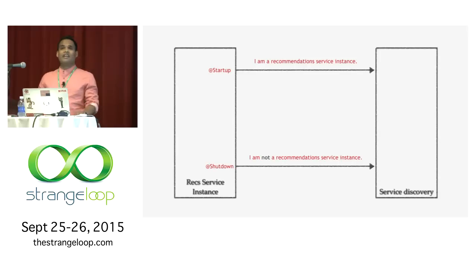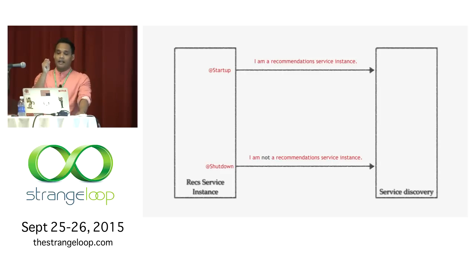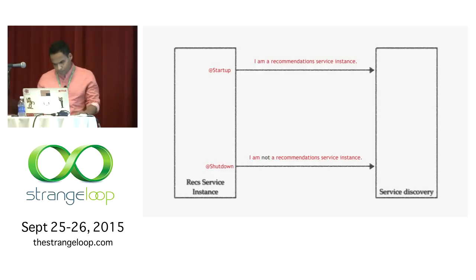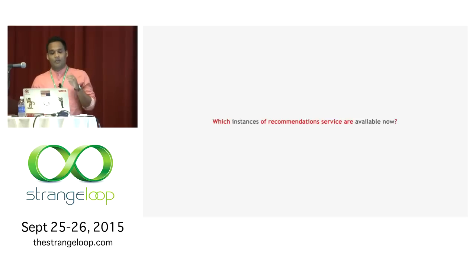The first part is: which machines have the recommendation service software deployed? We look up our dynamic mapping registry for what instances are available for recommendation service. But how do we even get that data? Any instance that starts in our data center has two distinct states. On startup, it tells the service discovery system: here I am, I'm a recommendation service instance running on this IP and port. When it shuts down, it sends another event saying: wipe me out of your registry. Considering these two events from any instance, you can answer which instances are registered as recommendation service.